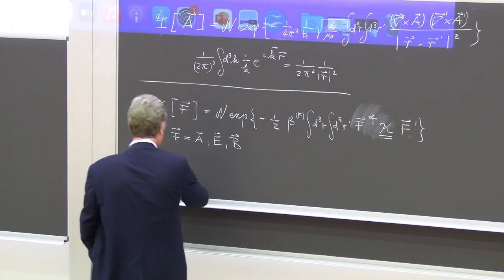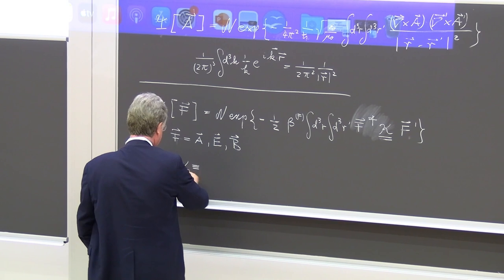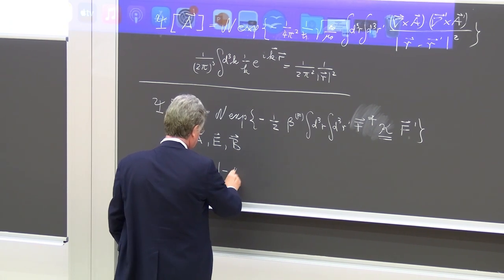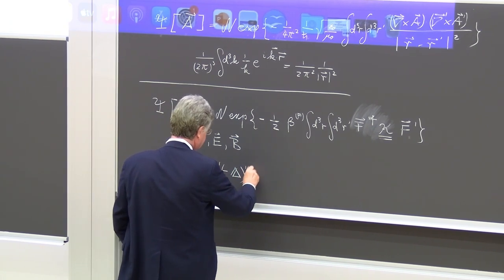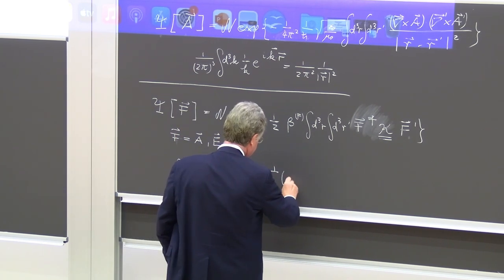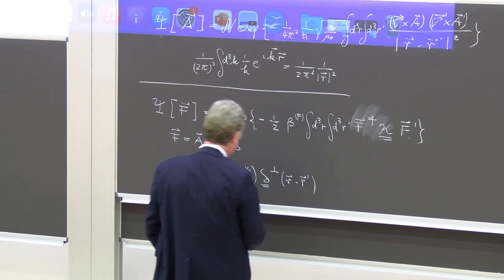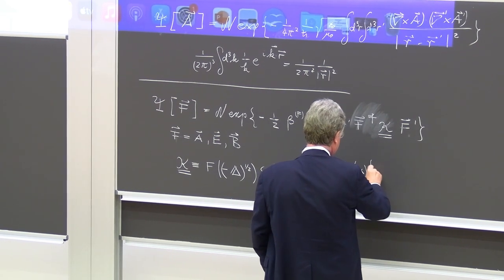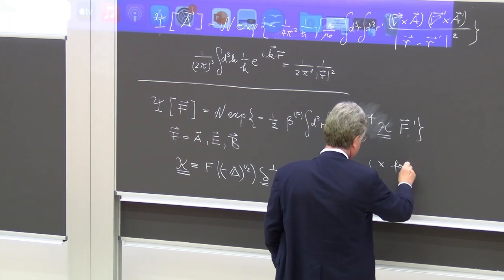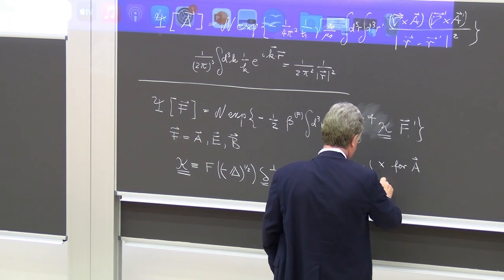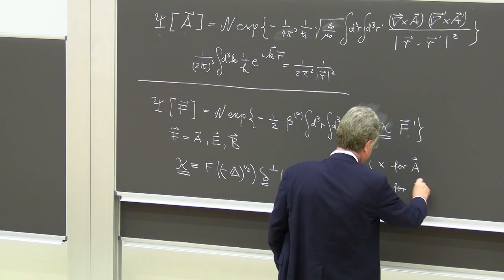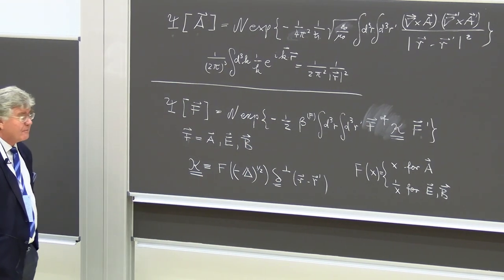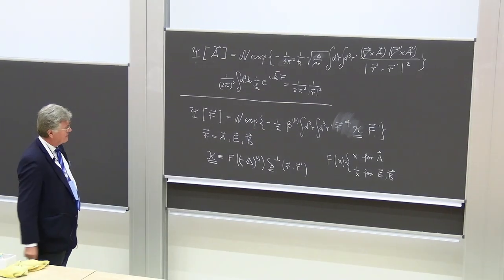Now, the kernel that I have written down is, as I said, a matrix. And the matrix comes by having a function F, taking the square root of the Laplacian, acting on a transverse delta function of R minus R prime. And the function F is either X for A, for the vector potential, or it is 1 over X for E and B. So let me get, and this is the main result. That's why I started the talk, so I can at least show you what it is that we did.